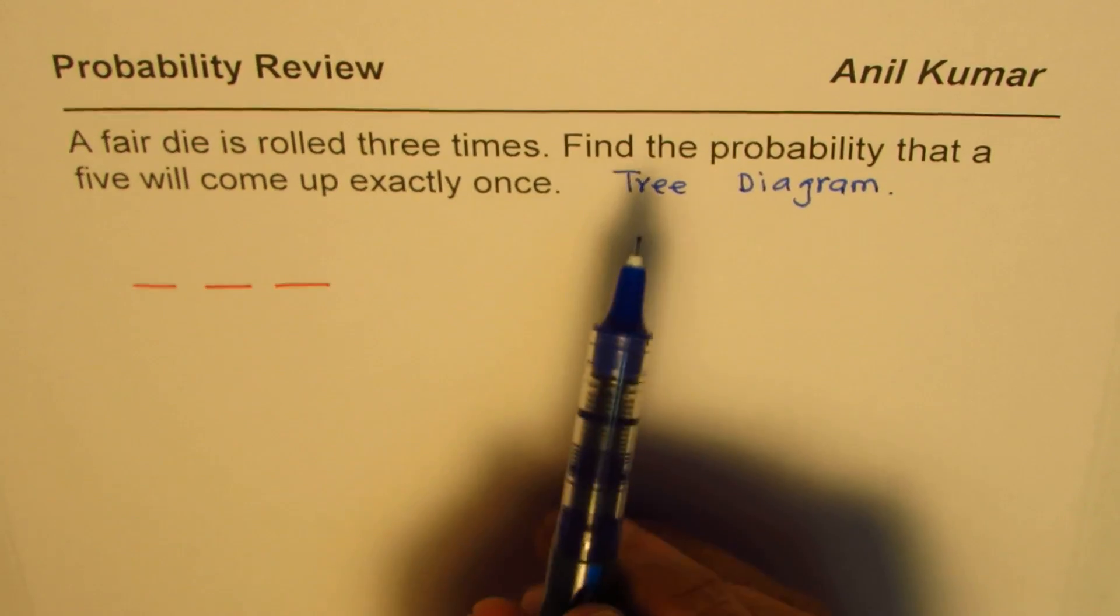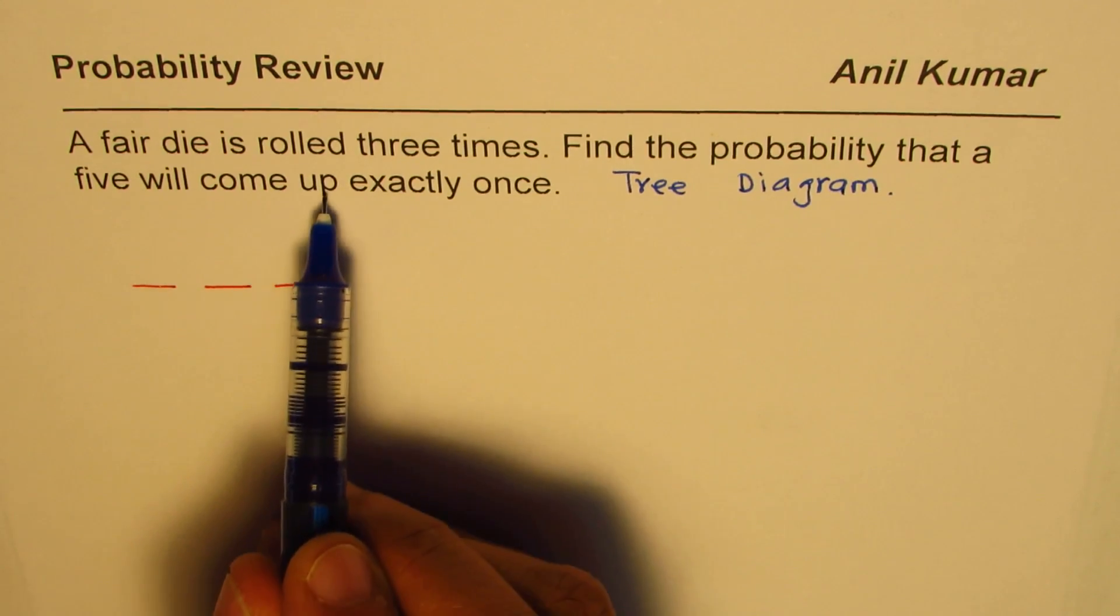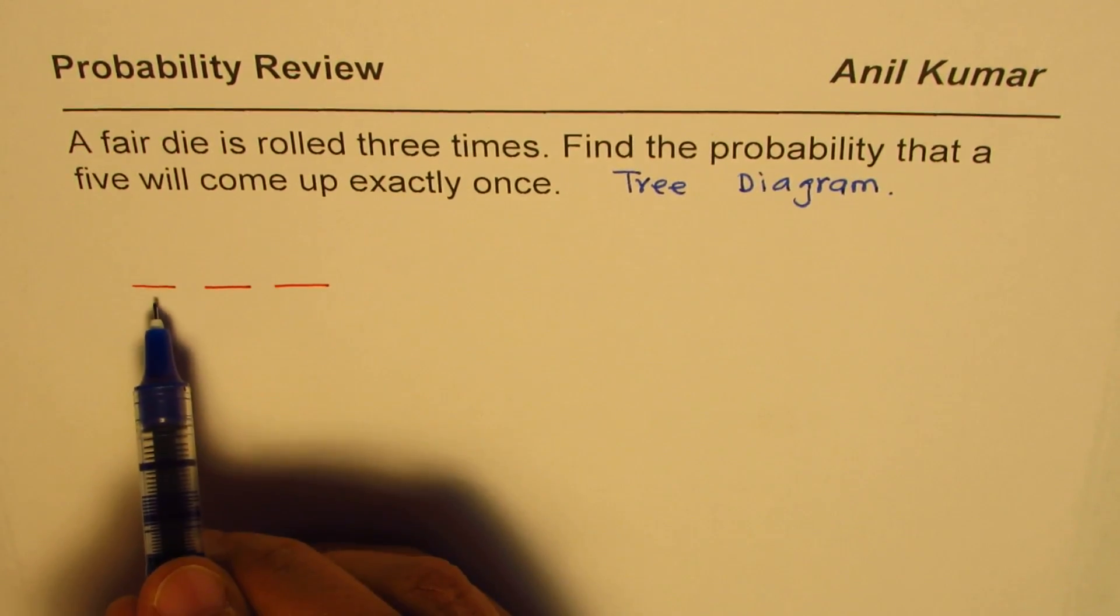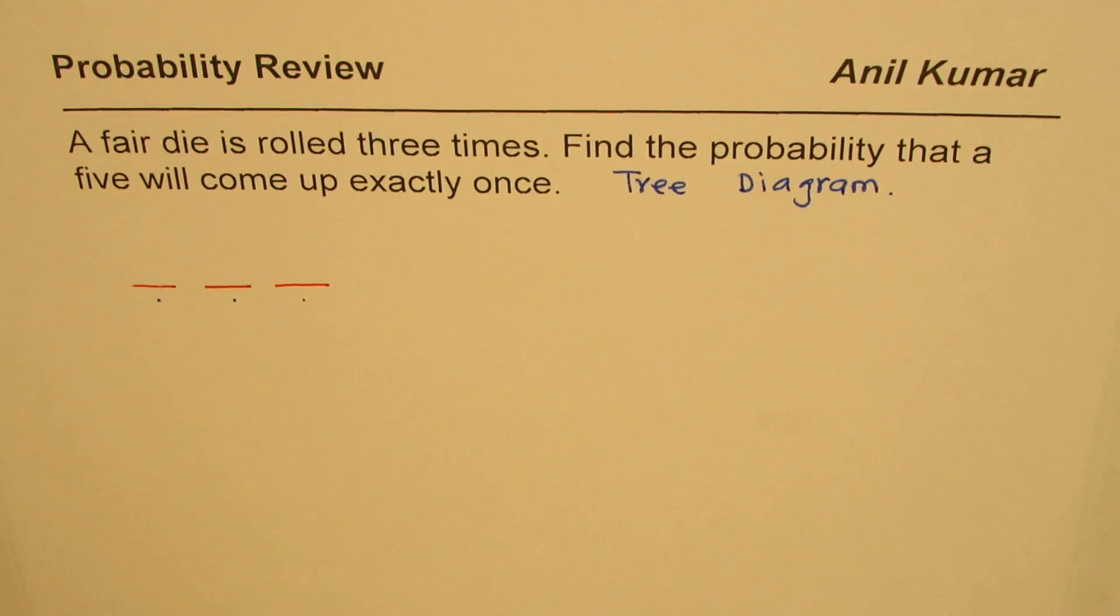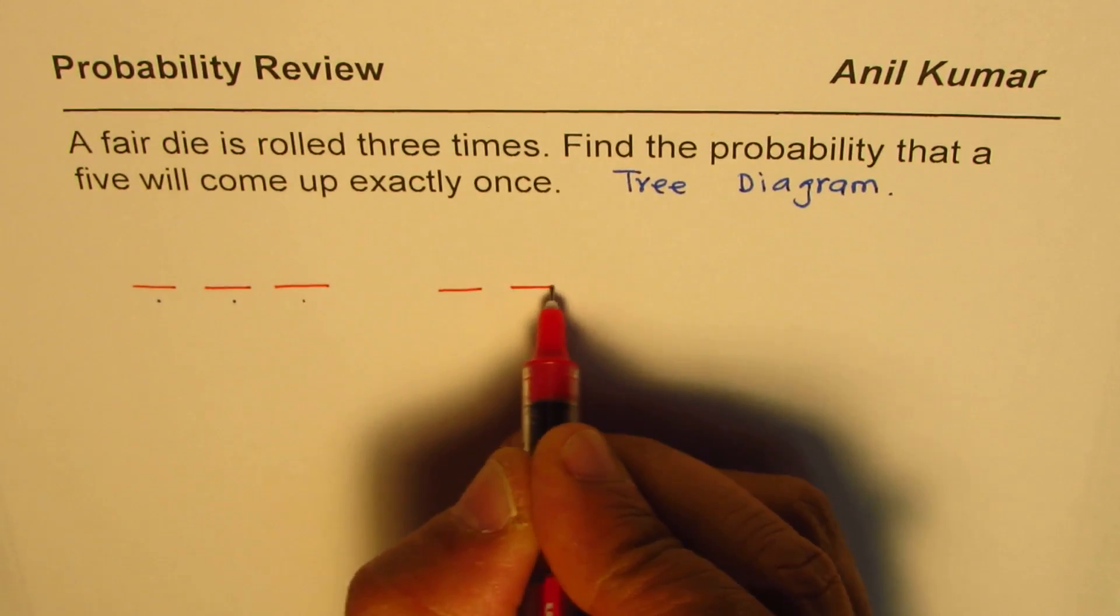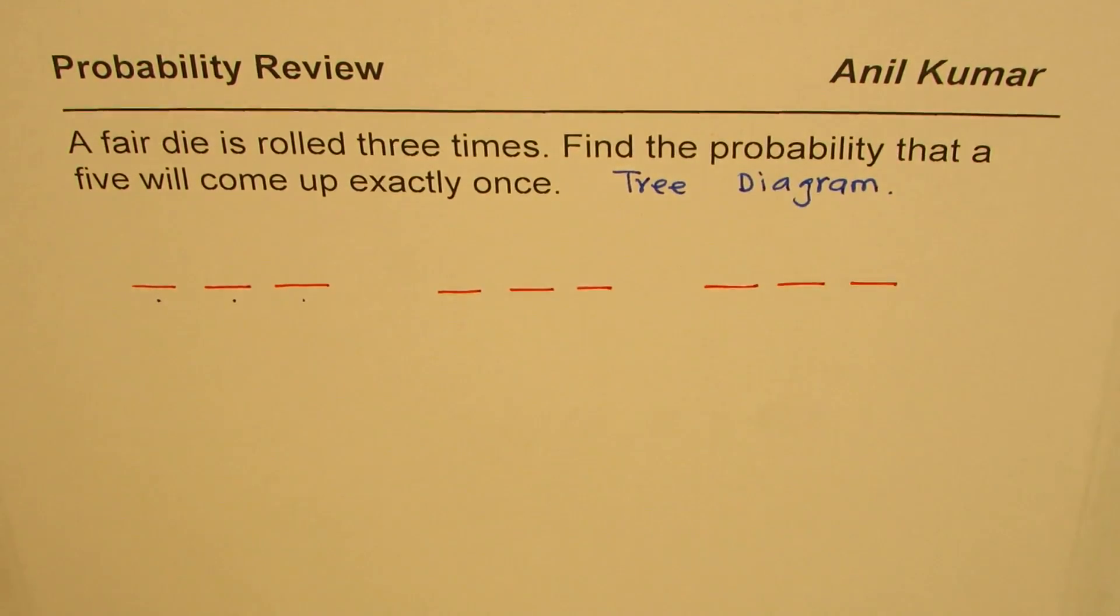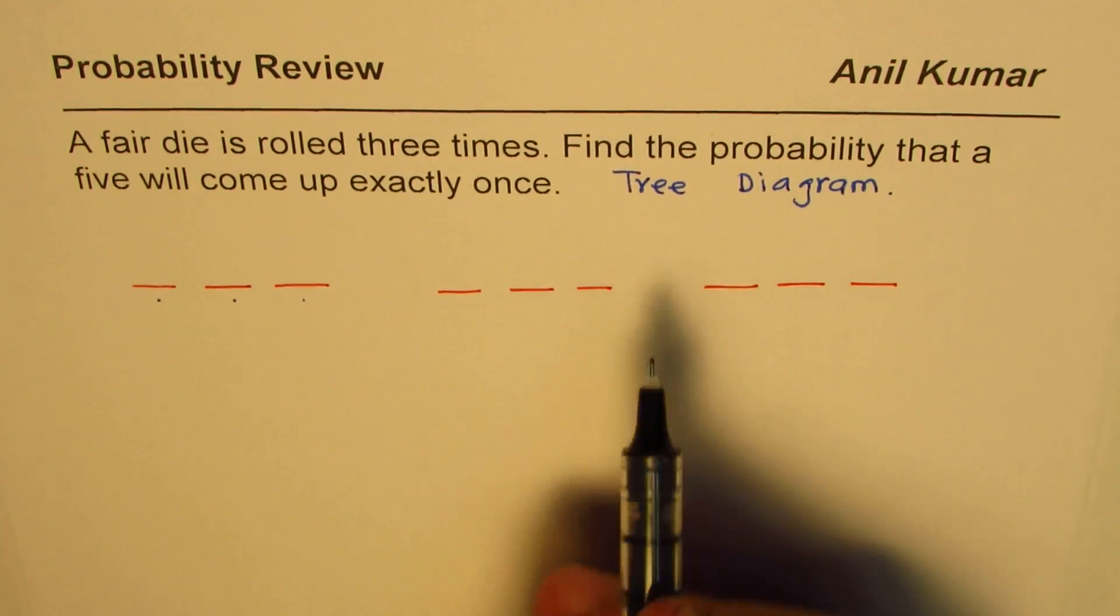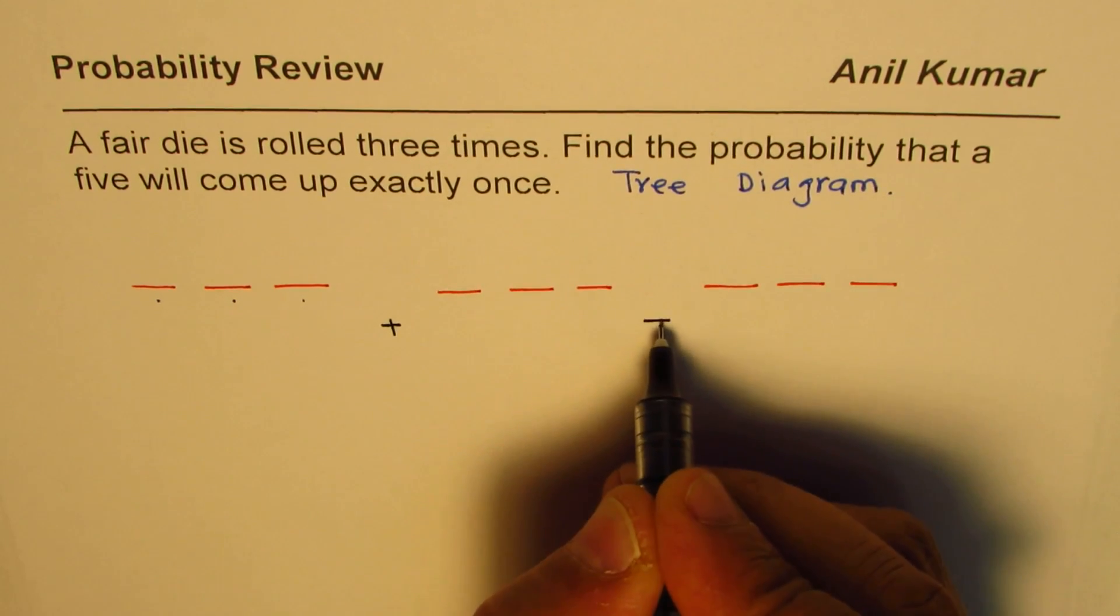Now when we say find the probability that five will come up exactly once, that means five will definitely come, it could come in the position first, second or third. So we'll consider three options. It could come either in the first position or in the second position or in the third position.